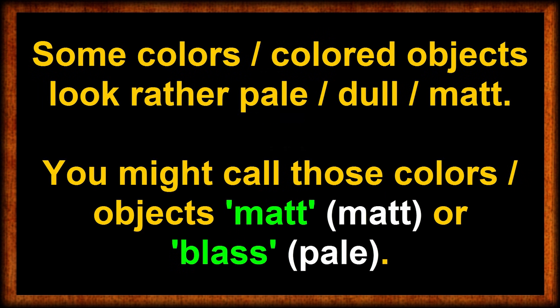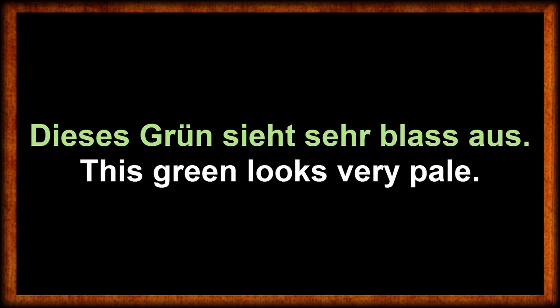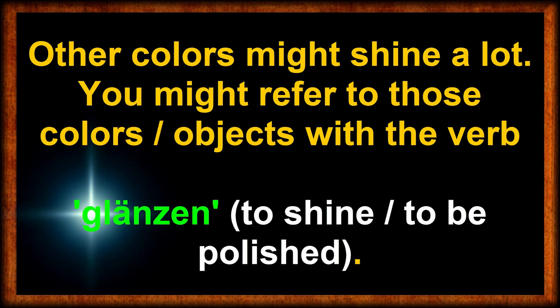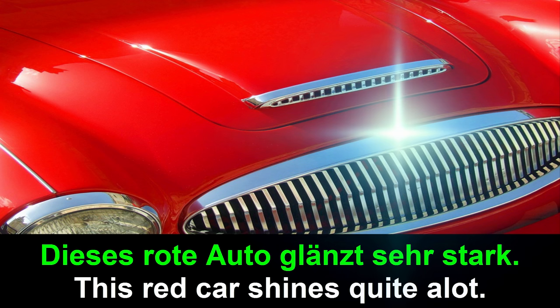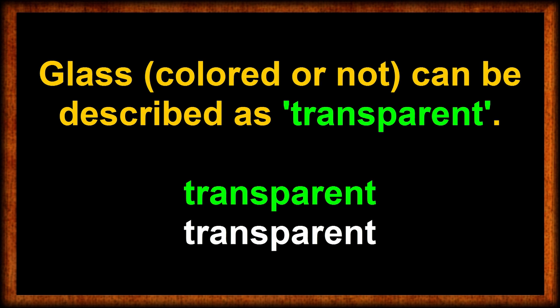Certain colored objects might appear rather pale, weak, dull, or matte. You can refer to those objects or the actual color by saying matt — matte — or blass — pale. Dieses Grün sieht sehr blass aus — this green looks very pale. Other colors or colored objects might shine a lot. You can refer to them with the German verb glänzen — to shine or to be polished. Dieses rote Auto glänzt sehr stark — this red car shines quite a lot. And even though drinking glasses might be pigmented, they still remain transparent.